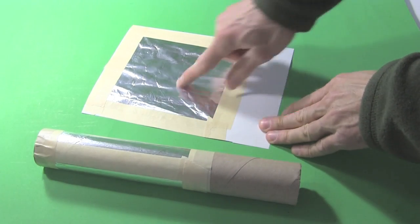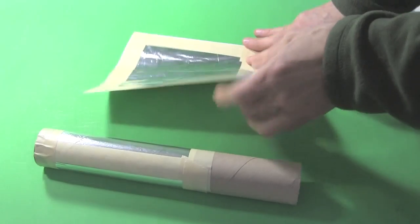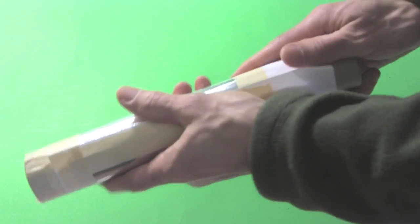Next you want to take the paper with the aluminum foil and wrap it around the tube. Wrap it around tightly. But not so tightly that you can't slide it back and forth.